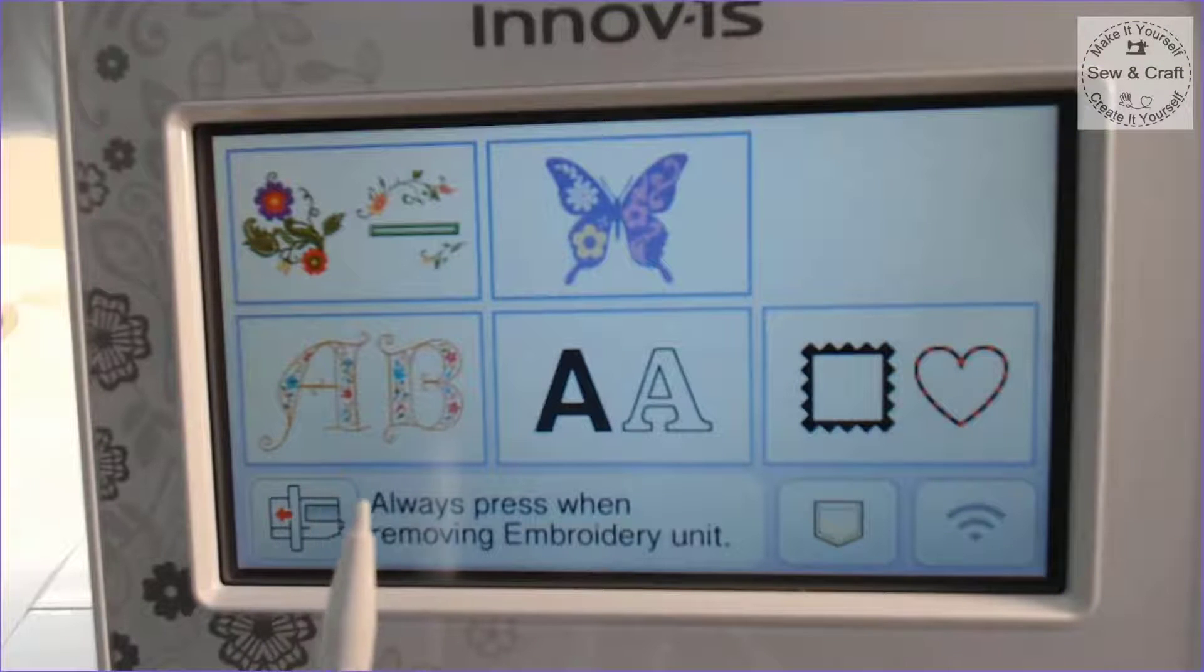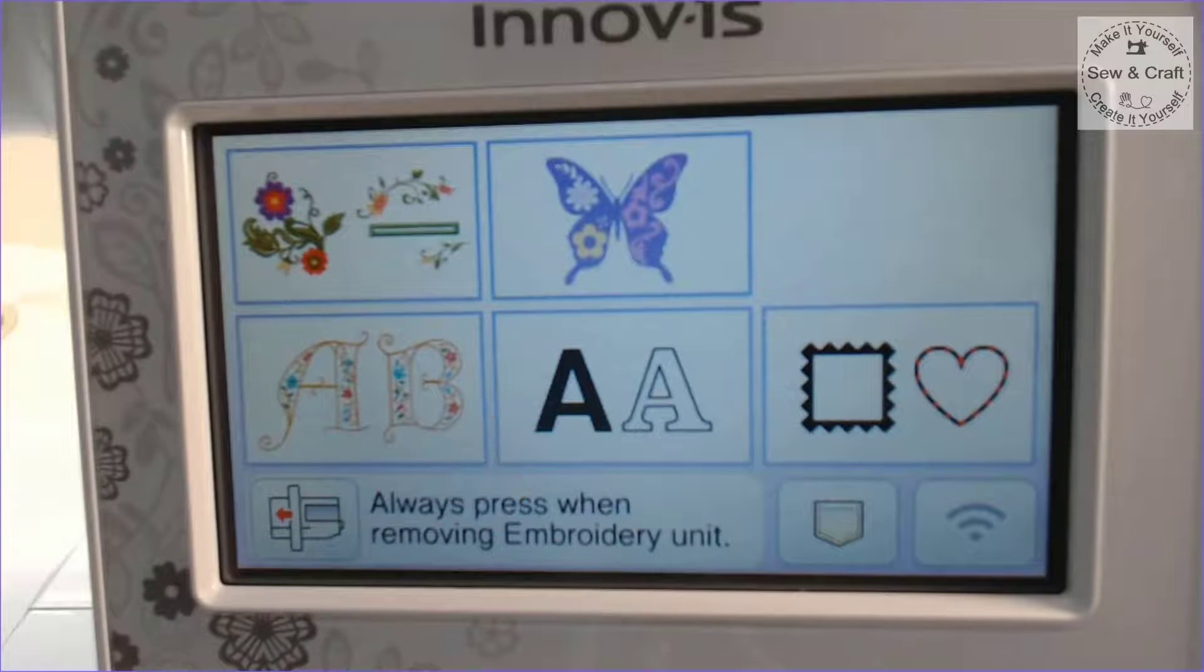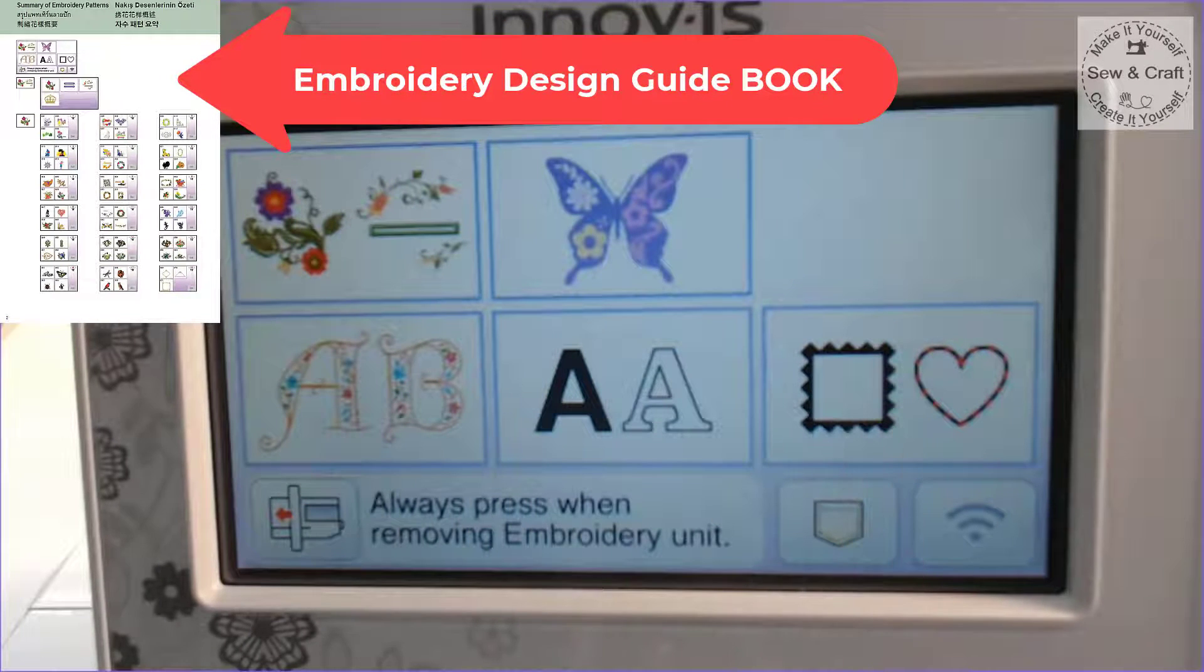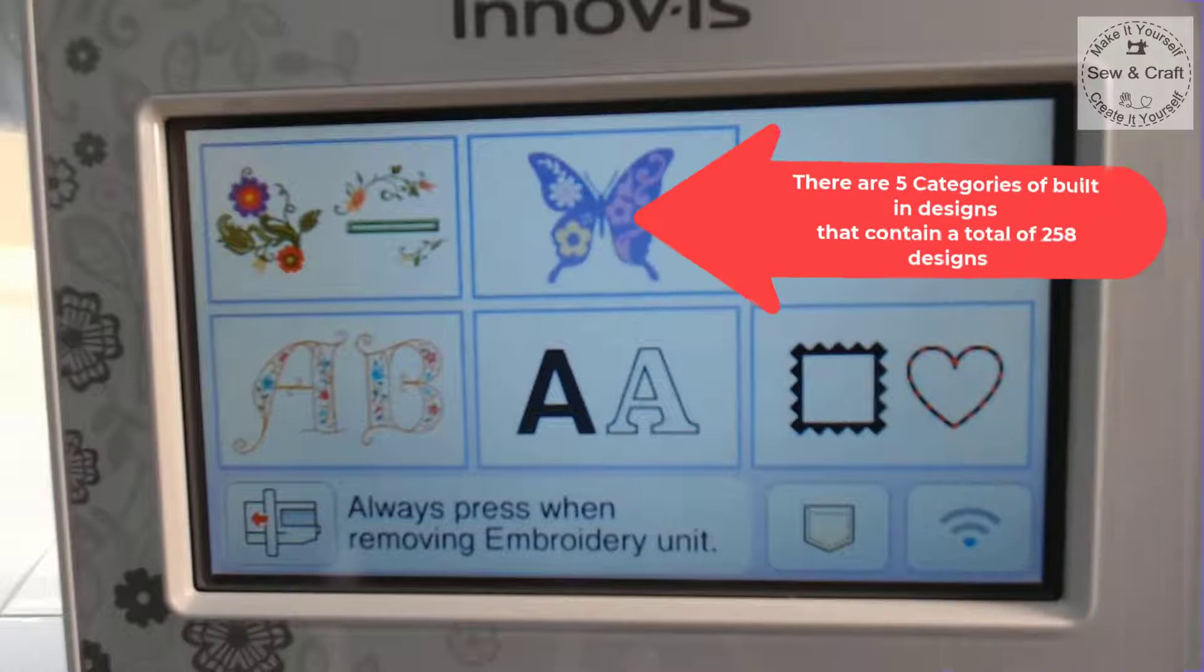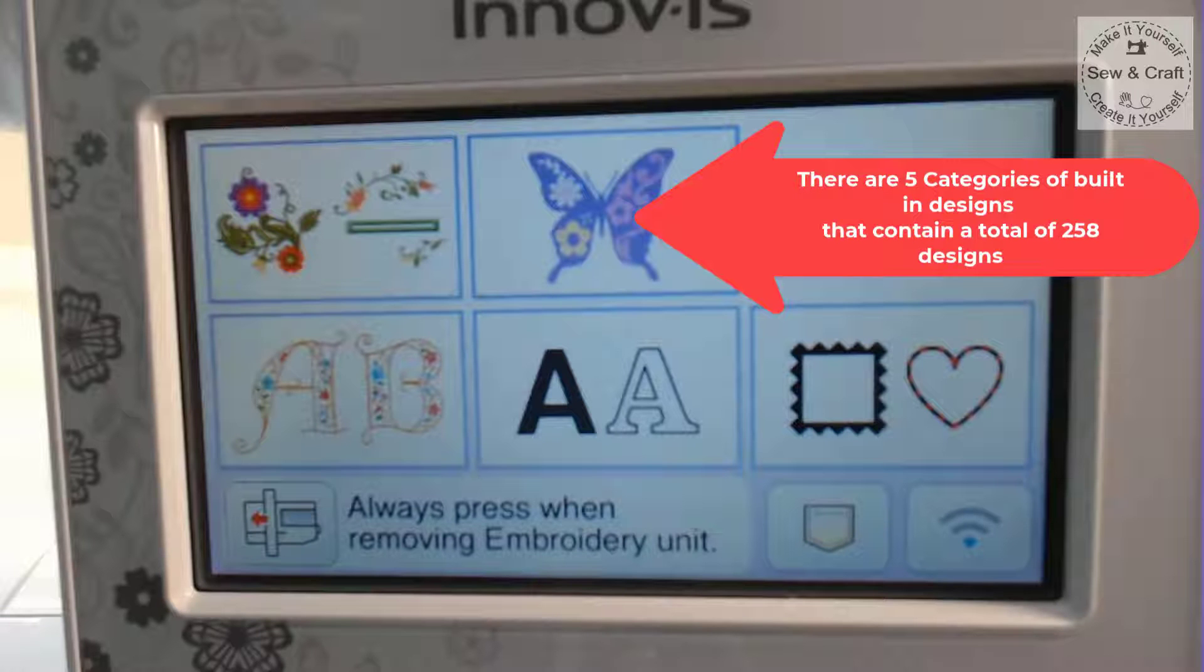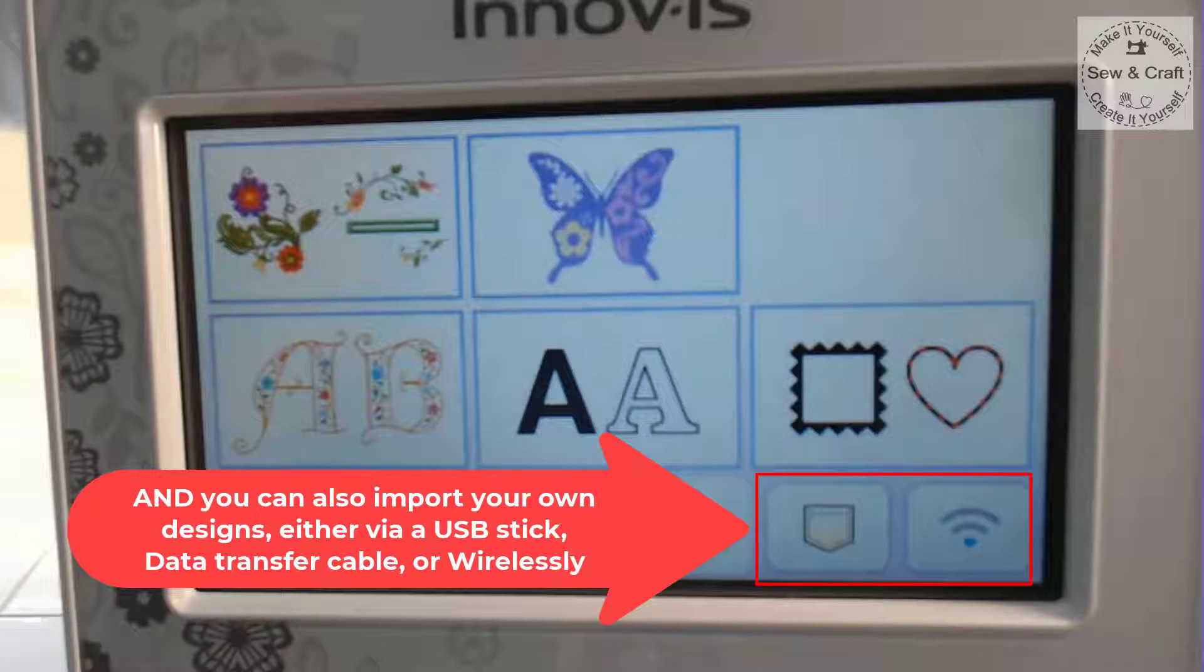To select a design from the machine is really easy because it's a touch screen. If you're not sure what's in each category, refer to the embroidery design guide which shows exactly what's in each category built in on the machine. There are five categories of built-in designs containing a total of 258 designs, and you can import your own designs via USB stick, data transfer cable, or wirelessly so there's no limit to what you can embroider.